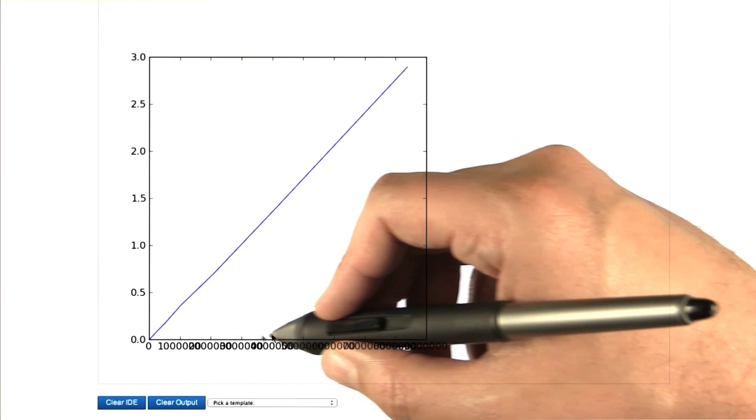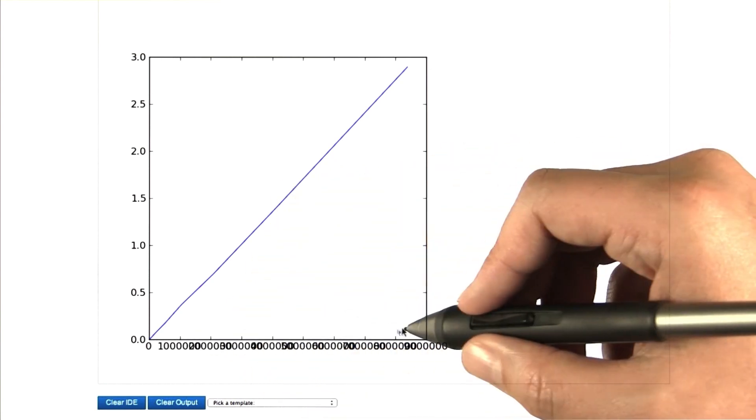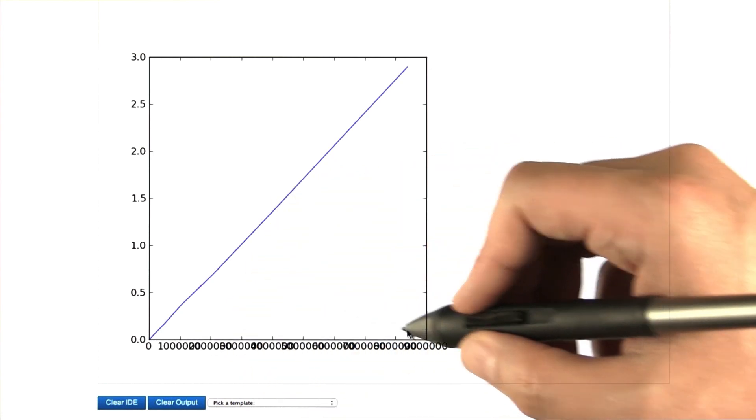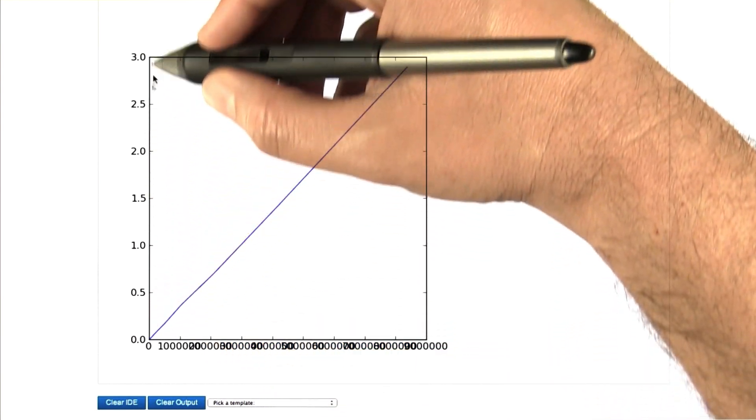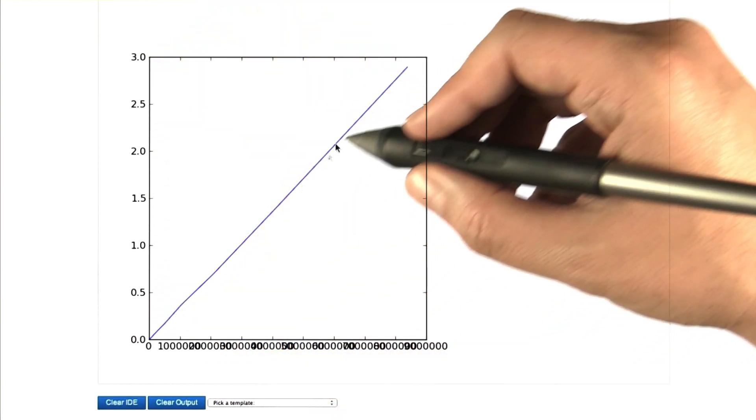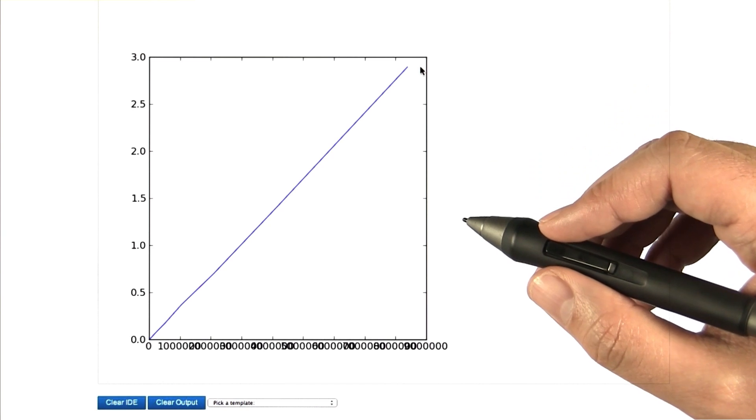Across this axis is the number that we're squaring. We're sending naive of this number, and it goes up to billions, and this is the time in seconds that it takes for it to execute, and you can see that it actually follows a very recognizable pattern.